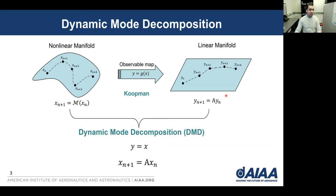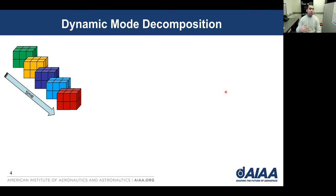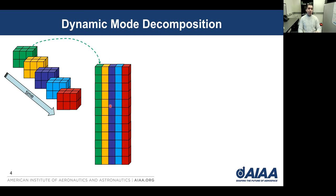DMD does similar stuff but in a data-driven framework. In its simplest form we assume that the observable is the state itself and we define this linear mapping in a least squares fashion. We assume these are collected data sets at different times. We reshape every snapshot in a column vector and stack all of them in a big data matrix and call it X.